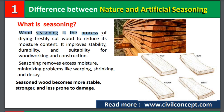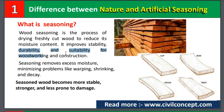Wood seasoning is the process of drying freshly cut wood to reduce its moisture content. The main objective of seasoning is to reduce its moisture content. It improves stability, durability, and stability for woodworking and construction.